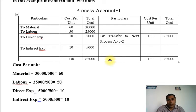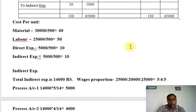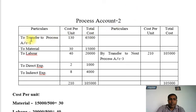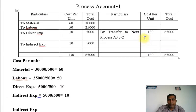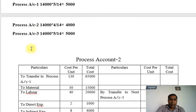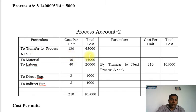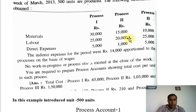Now we go to Process Account 2. We transfer from Process Account 1 — 500 units at 130 rupees, costing 65,000 — to the debit side of Process Account 2. Then we add: Material 15,000, Labor 20,000, and Direct Expense 1,000.